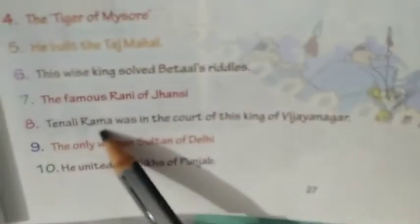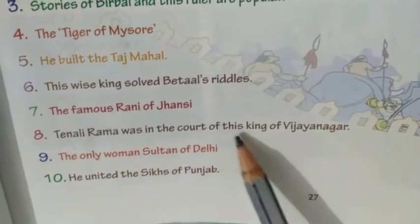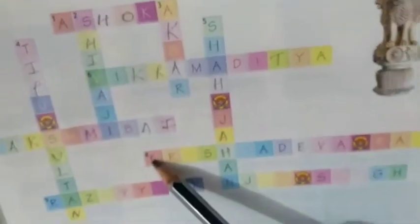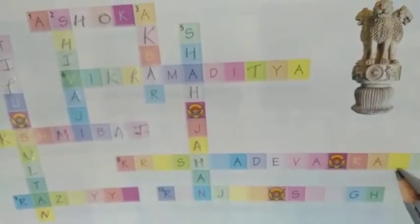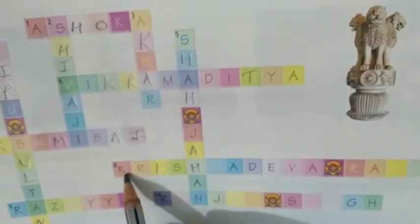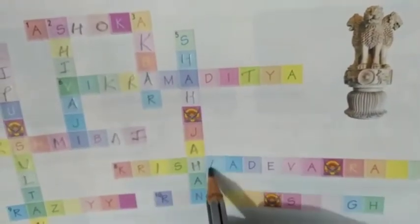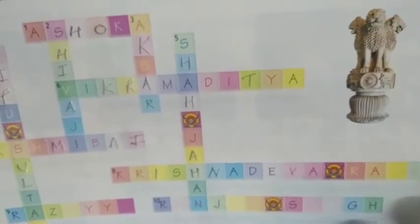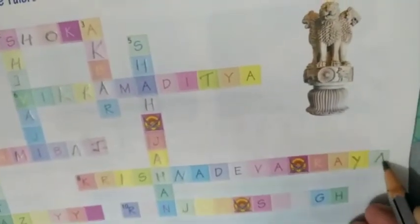Tenali Rama was in the court of this king of Vijayanagara. The answer is number 8 — Krishnadeva Raya. K-R-I-S-H-N-A-D-E-V-A R-A-Y-A.